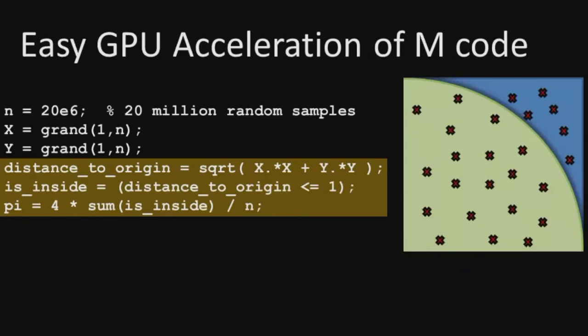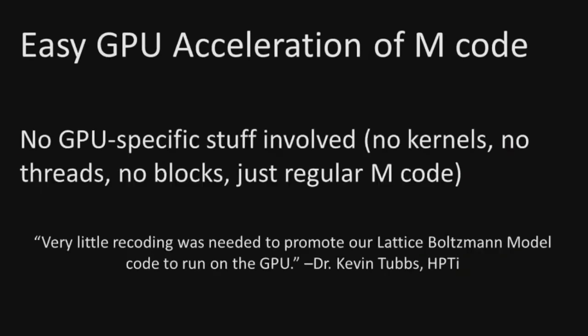Going back to our simple example: once we've created data on the GPU, all the following code will recompute the distance to the origin and compute how many points fell inside the circle, all running on the GPU since everything was instantiated from G-RAND, resulting in a G-single. That's how you work with JACKET to get GPU-accelerated MATLAB. No GPU-specific details are involved — you don't have to write any kernels, there are no threads, no blocking, just regular M code. All arrays work exactly the same way as with a CPU.